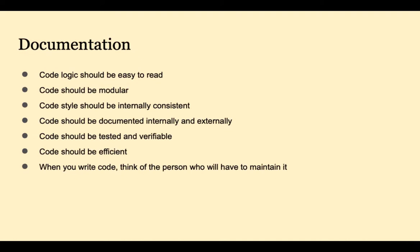Now let's talk about documentation. We're all guilty of writing the code and later going back to write documentation just because we have to. But we can help ourselves and fellow programmers by following a few simple guidelines. Our logic should be written in a way that's easy to read. It should be modular so we can break a huge problem down into bite-sized pieces. Your code style should be internally consistent, and you should document both internally and externally. Of course we need to test and verify our code, and we should consider efficiency. When you write code, think of the person who will have to maintain it — because it might just be you.